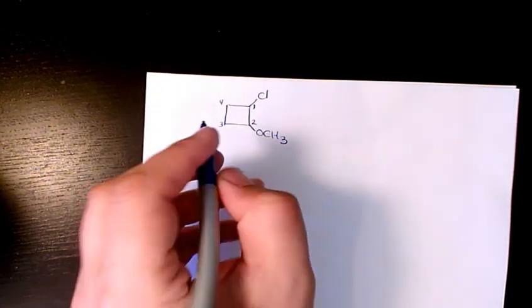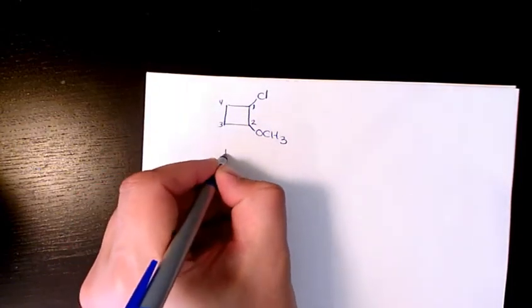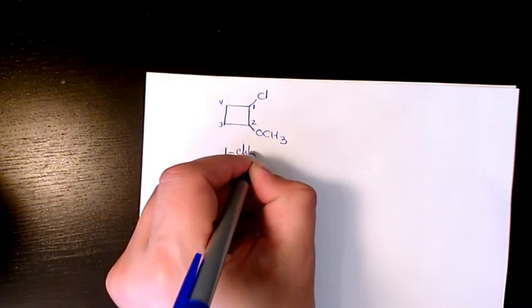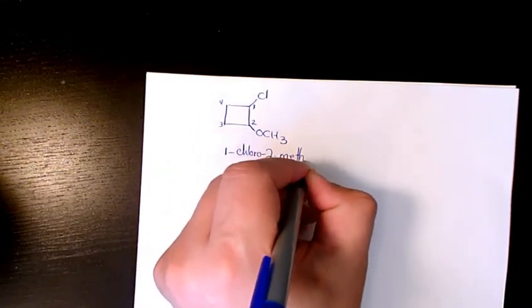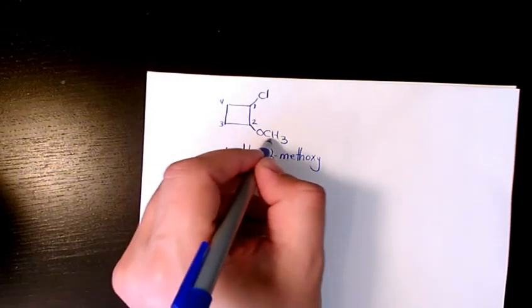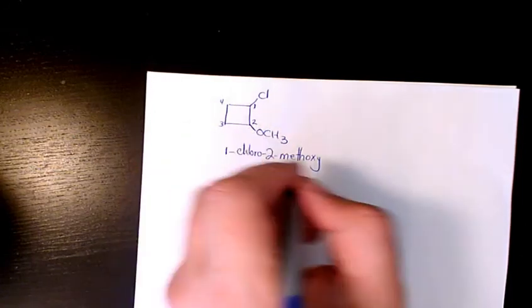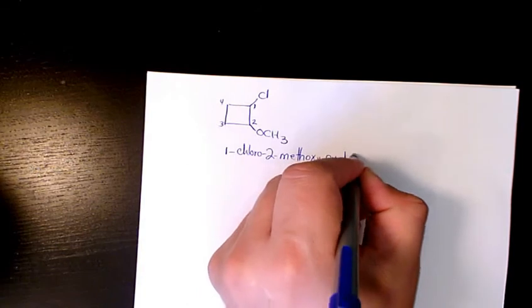One, two, three, four. So I'm gonna say it's one-chloro-two-methoxy, because this one's gonna be the alkoxy group—cyclobutane.